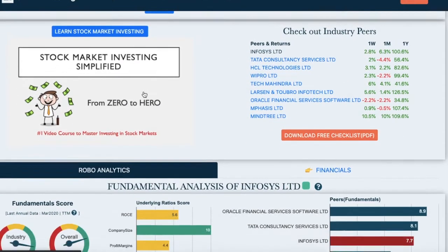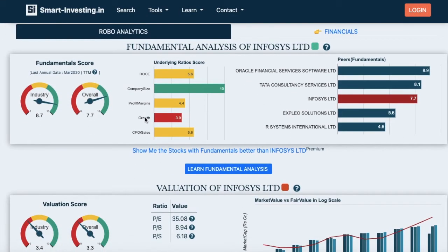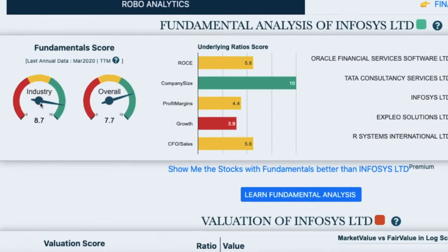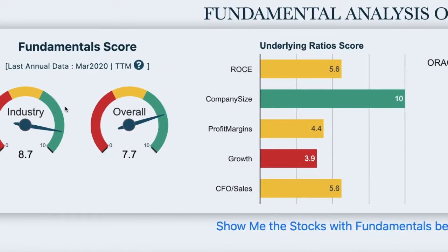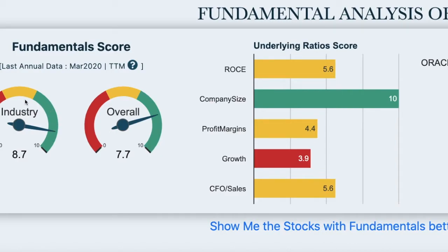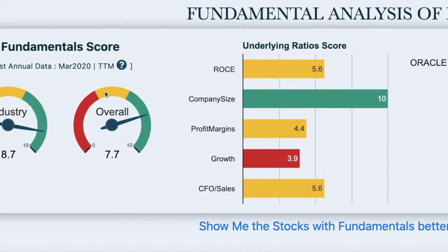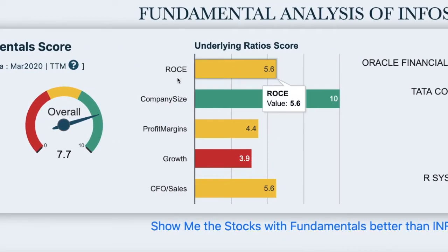Once you scroll below, each of the six color-coded squares are now explained in detail using charts and underlying scores. The first one is Fundamentals, which gives you the score of the stock within the industry as well as overall. Scores above six are color-coded as green, between four to six as yellow, and less than four as red. The Fundamentals scores are derived based on various underlying parameters such as return on capital employed (ROCE), company size based on market cap, profit margins, growth, and cash flow from operations to sales ratio.